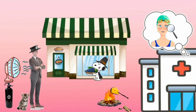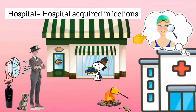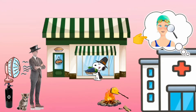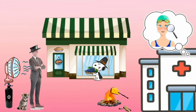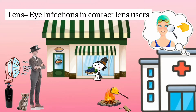The man has come to visit his friend in the hospital. The hospital implies that Pseudomonas causes hospital-acquired infections. His friend is a swimmer, implying that Pseudomonas causes swimmer's ear, also known as otitis externa. The swimmer also implies that Pseudomonas causes infections in moist environments.